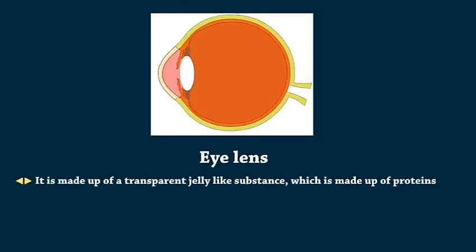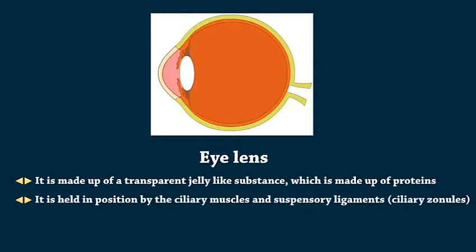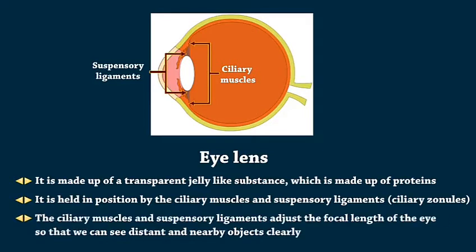Eye Lens is made up of a transparent jelly-like substance, which is made up of proteins. It is held in position by the ciliary muscles and suspensory ligaments. The ciliary muscles and suspensory ligaments adjust the focal length of the eye so that we can see distant and nearby objects clearly.